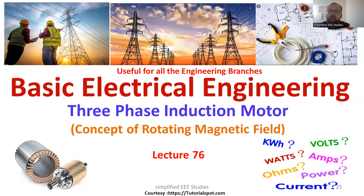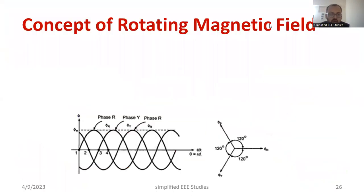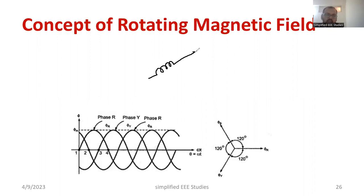This is one of the very important questions from your exam point of view. First of all, let us draw a three-phase induction motor. We have to draw the stator winding and the stator first. Let us assume that stator is connected in delta fashion. There are two types of three-phase connection — one is star, another one is delta.